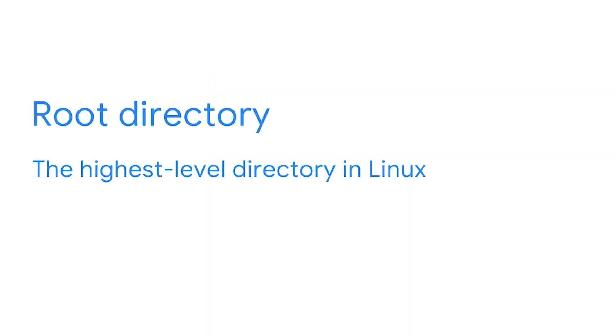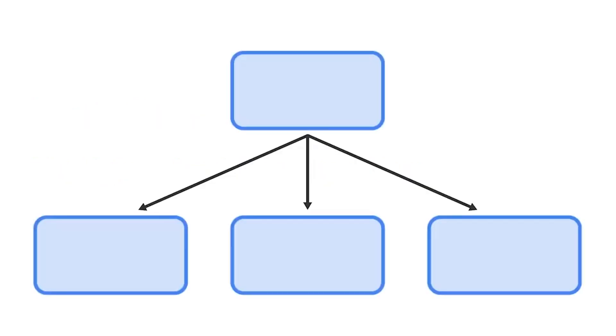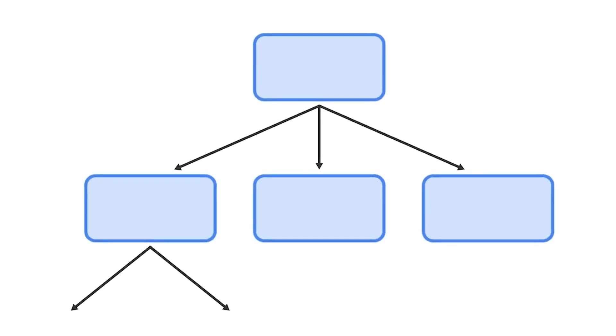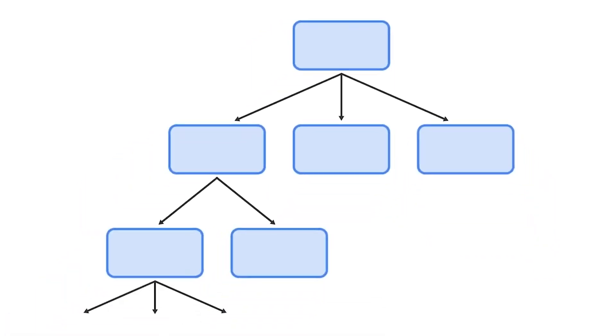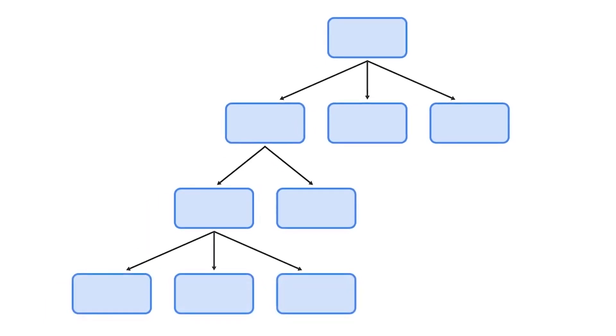The root directory is the highest level directory in Linux. It's designated by a single slash. Subdirectories branch out from the root directory, branching out further and further away. When describing the directory structure in Linux, slashes are used when tracing back through these branches to the root.